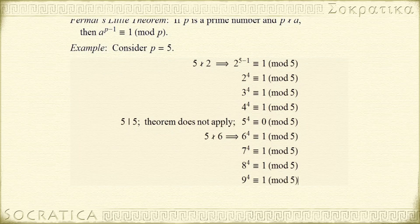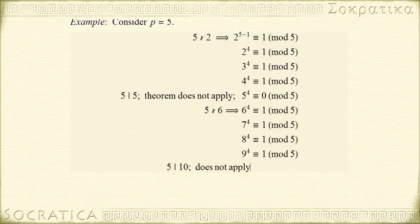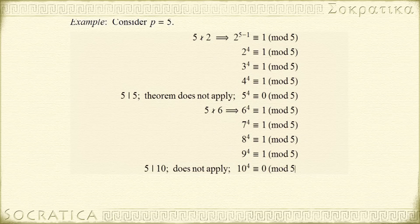Now we get to 10. Once again, 10 and 5 are not relatively prime — 5 does divide 10 — so the theorem does not apply here. And in fact, 10 to the 4th is congruent to 0 mod 5. And this goes on forever.